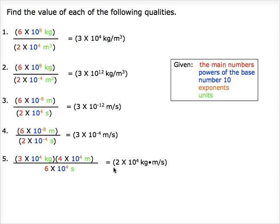The final unit was found by multiplying kilograms by meters, then dividing by seconds.